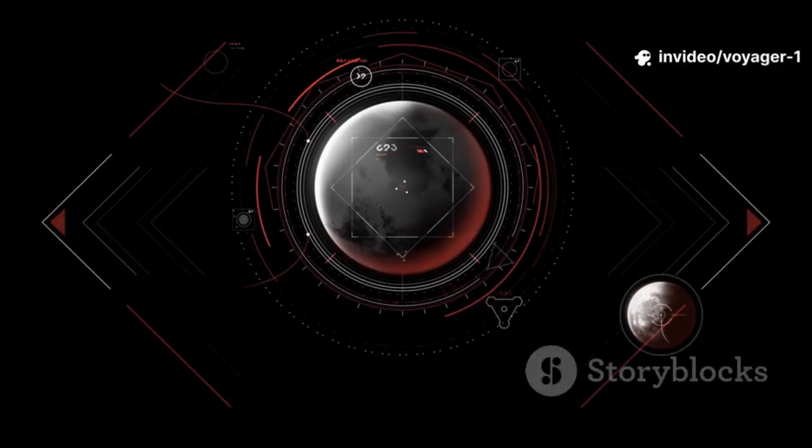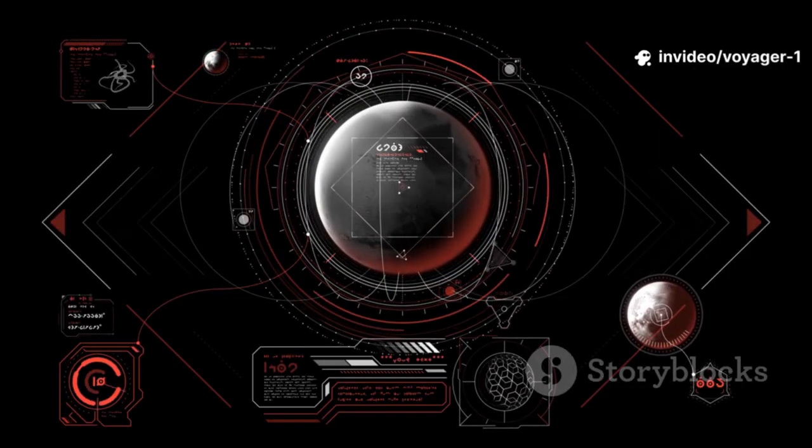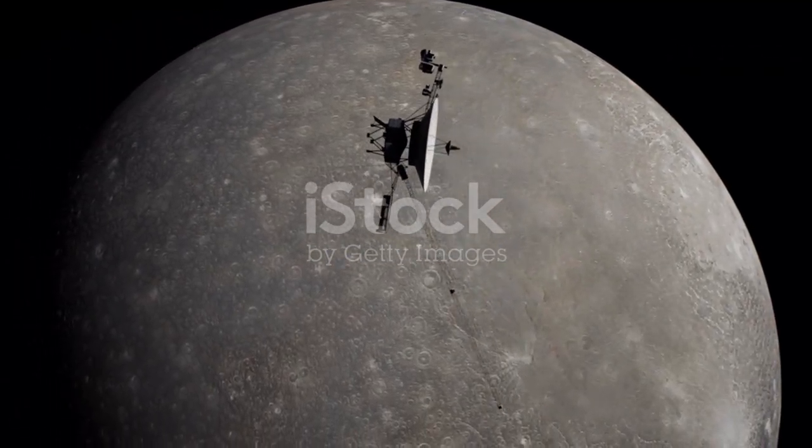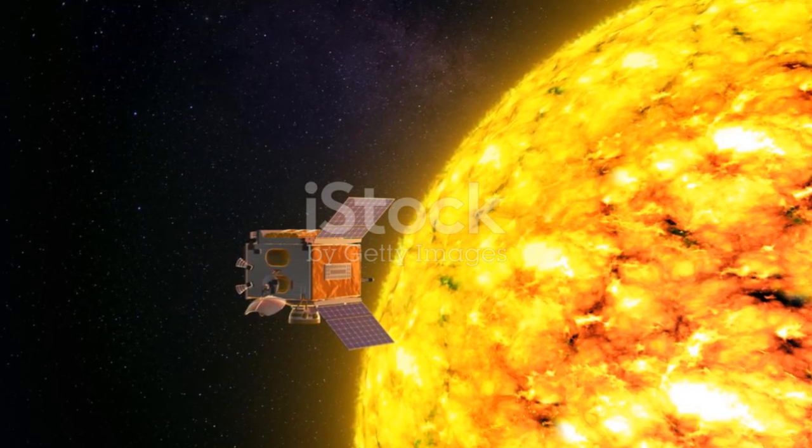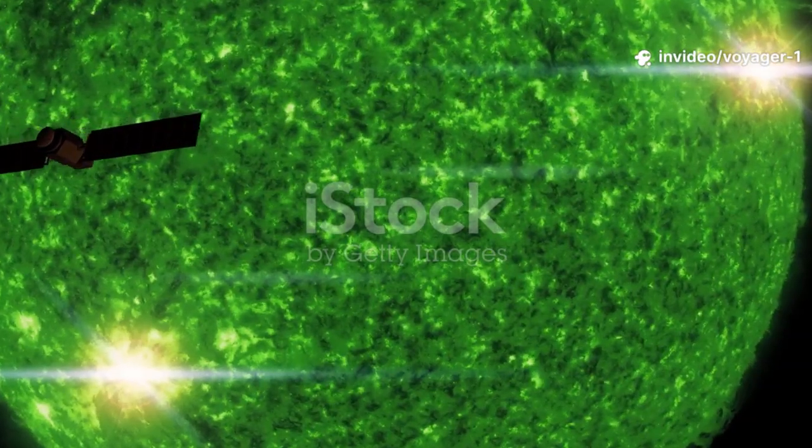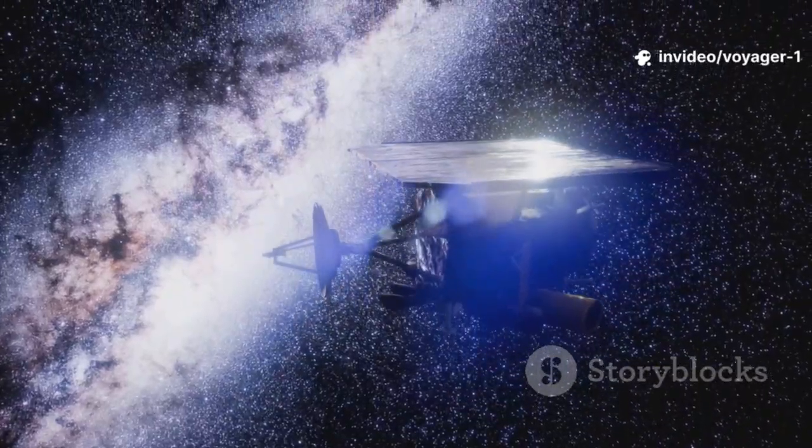Before Voyager 1 reached the edge, scientists had a pretty clear idea of what it should look like. They called this boundary the heliopause. Think of our sun as a giant star that is constantly blowing a wind of charged particles out in all directions. This is the solar wind.